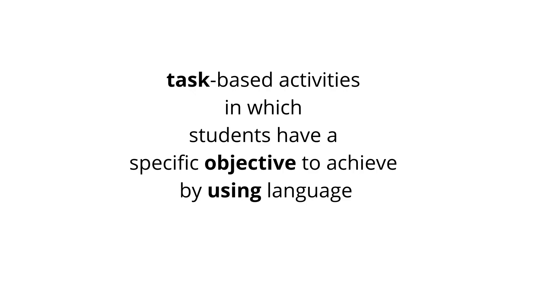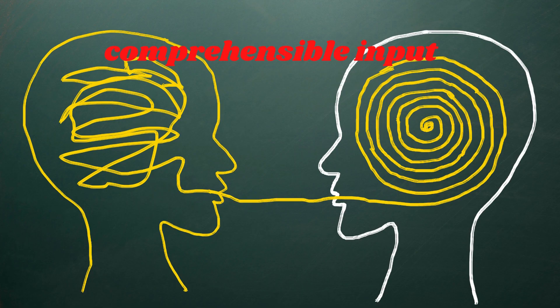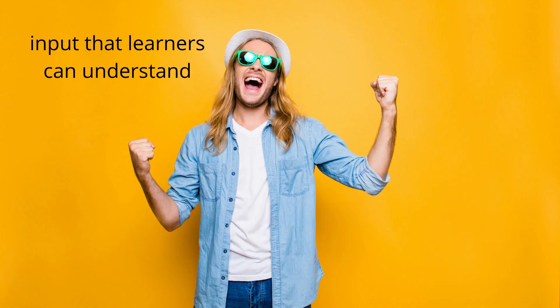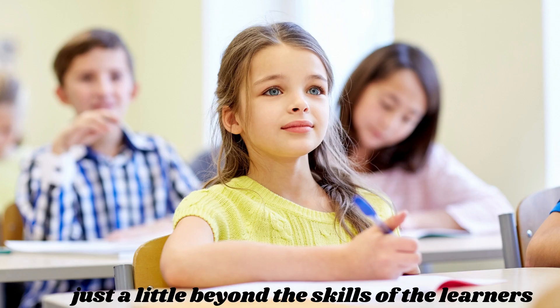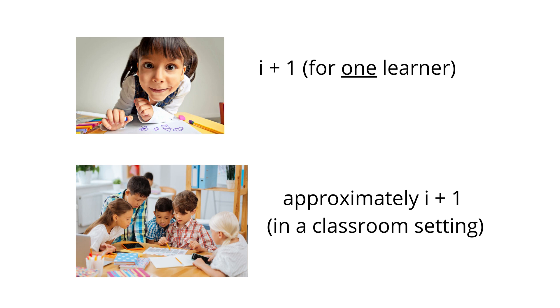CLT involves a lot of task-based activities in which students have a specific objective to achieve using language. In addition, communicative language teaching emphasizes exposure to comprehensible input — input that learners can understand, just a little beyond the skills of the learners. This would be I+1 for a specific learner, but since there are many learners in a class, the kind of input that must be provided is approximately I+1 in order to be useful for different learners.